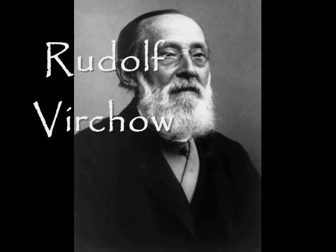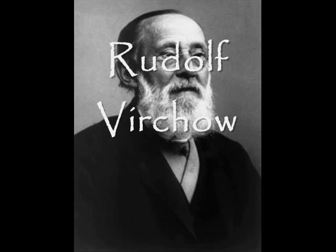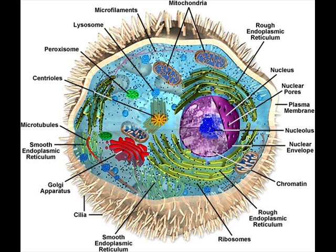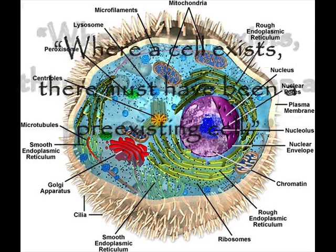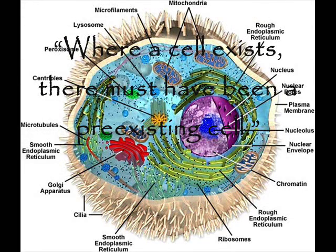In 1855, Rudolf Virchow published a theory stating that all cells come from other cells. He explained: where a cell exists, there must have been a pre-existing cell.